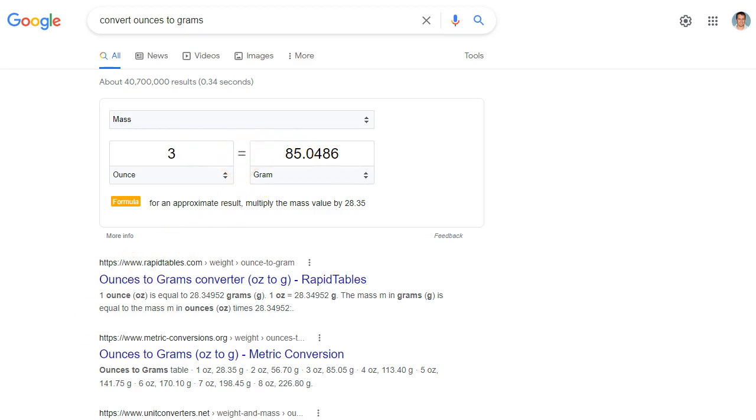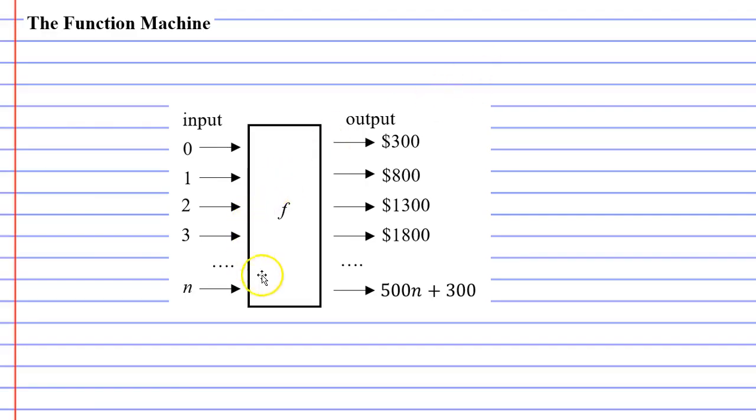So I take my function machine, I input a value of 3, and it gives me an output of 85 grams. Now what Google is doing here is they have some sort of an equation or function working in the background. I take my input, they substitute that input into their special equation or function, and then give an output. That's basically what we mean when we talk about a function machine.